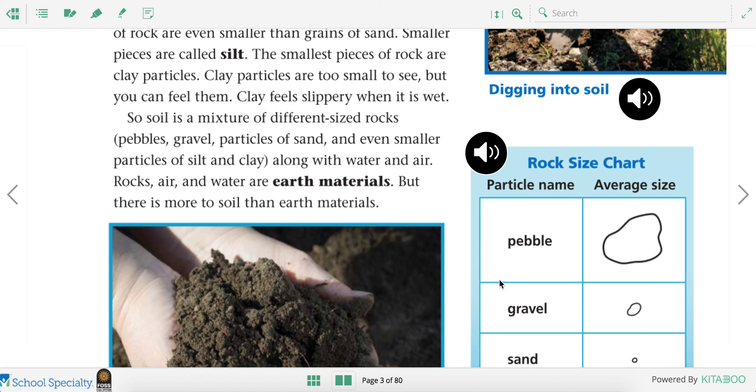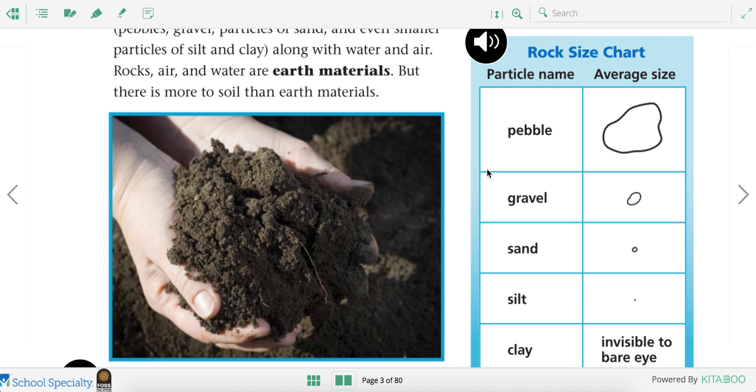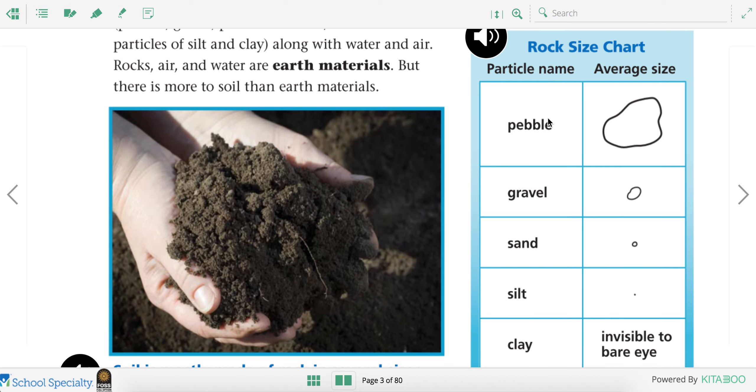Let's look at this rock size chart here on the bottom. These are the different particle names and these are their average sizes. So pebbles are about this big. Gravel, this big. Sand, pretty small.